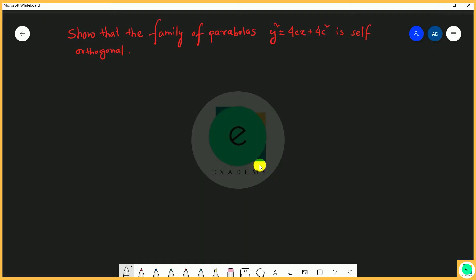Hey guys, welcome to Exademy with redefining education. So today we are going to solve another question from 2016. The question is: show that the family of parabolas y² = 4cx + 4c² is self-orthogonal.